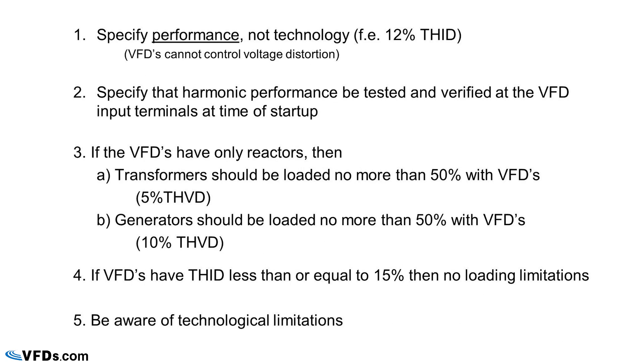So our solution: number one, specify performance technology. If you need 12% harmonic distortion, specify that. Next, specify that it be tested. In the case of variable frequency drives, we recommend that you specify that it be tested at the variable frequency drive input terminals. Next, if you have variable frequency drives with only reactors, don't load a transformer or a generator to more than 50%. If the variable frequency drives have other filters, go ahead and load that up to 100%. That's a brief overview of power system pollution and harmonics. If you'd like more detail, please feel free to call one of our knowledgeable specialists at VFDs.com. Check out our extensive inventory of drives and also of drive accessories, such as the three-phase line reactors that we have mentioned today.